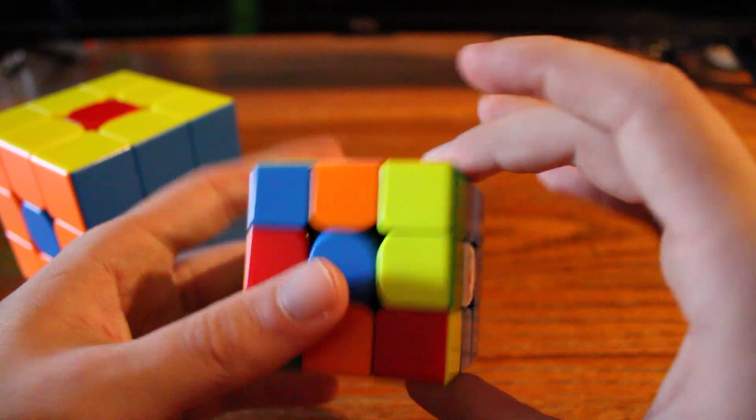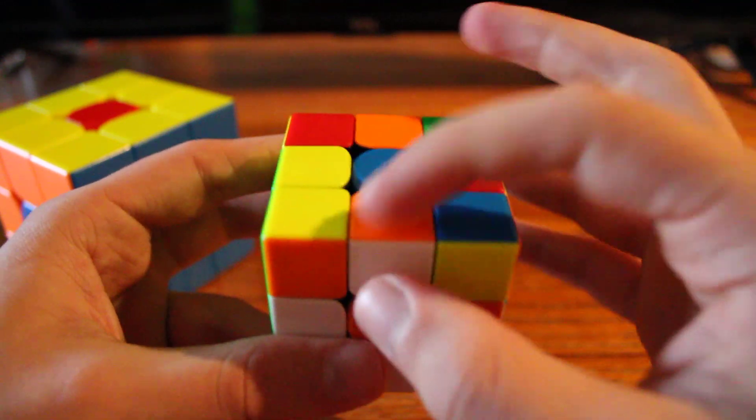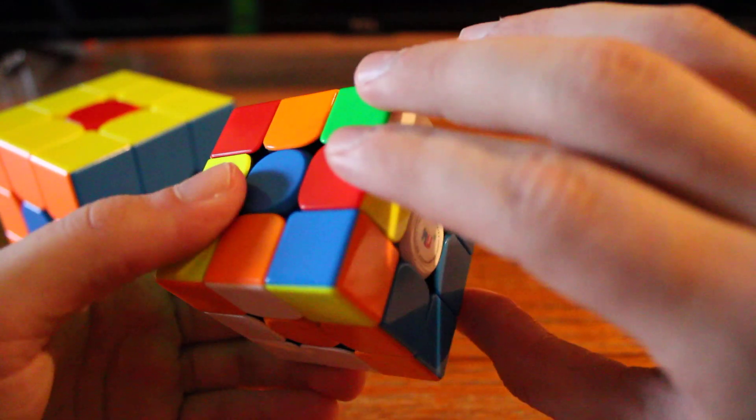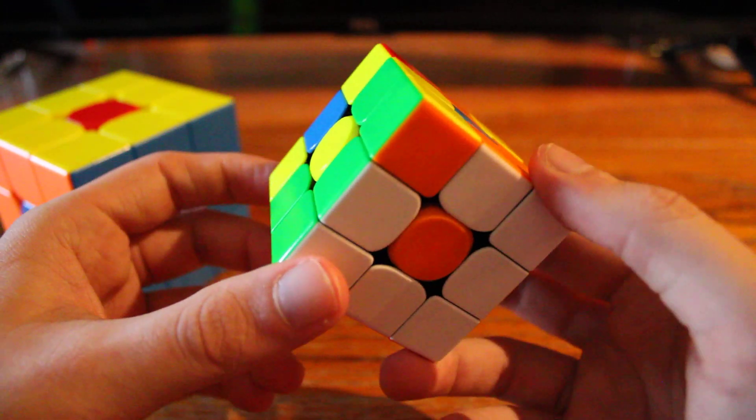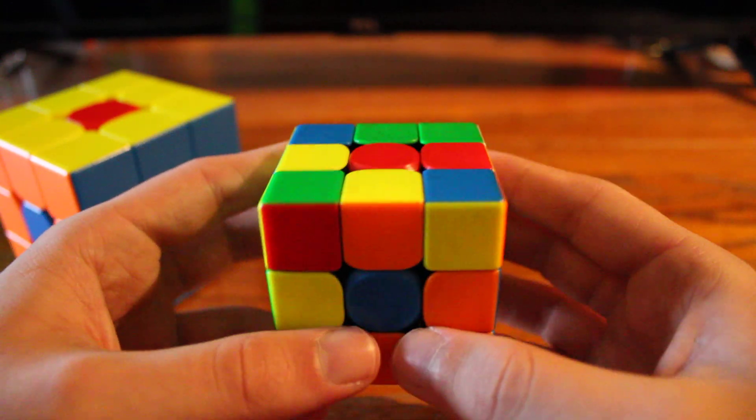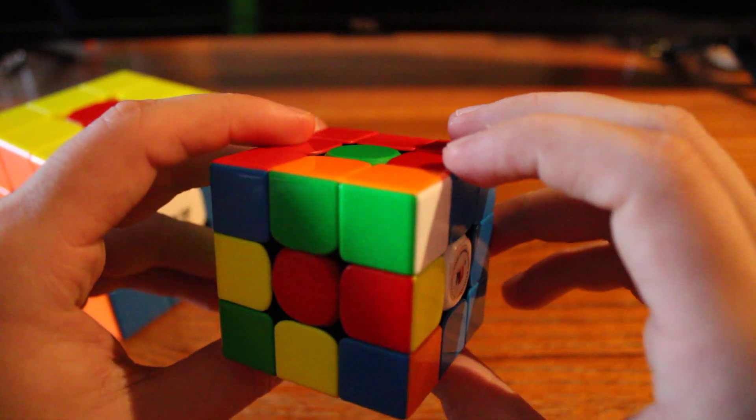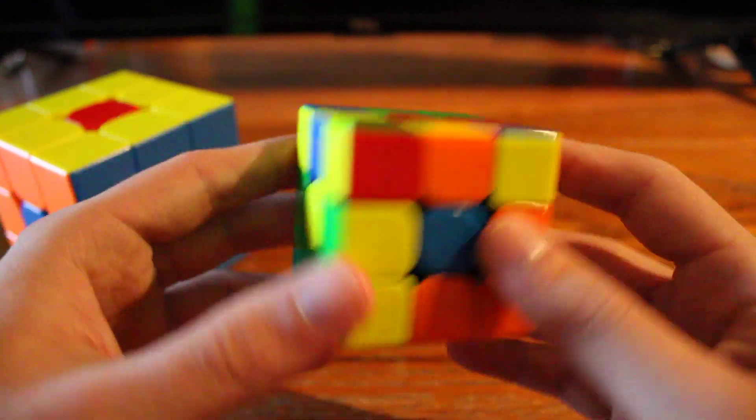And then I do an R2, so I can perform an F2 and place the white-orange edge into its correct spot. And an R in order to place that final block, and that gives me three pairs and the cross as well. And so then conveniently, here in the back, I have a free white-green-orange pair, which just goes here.